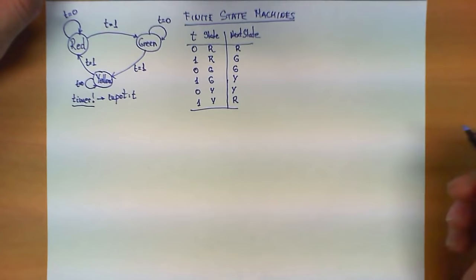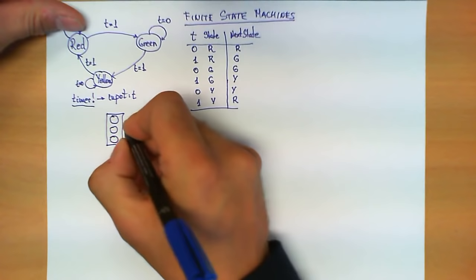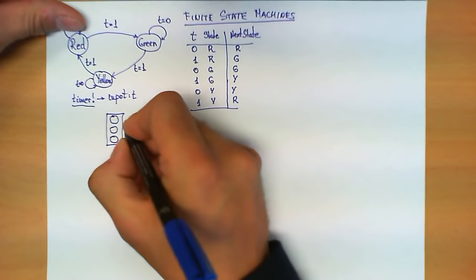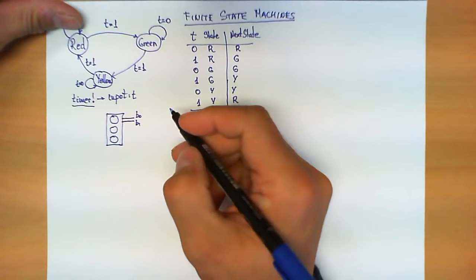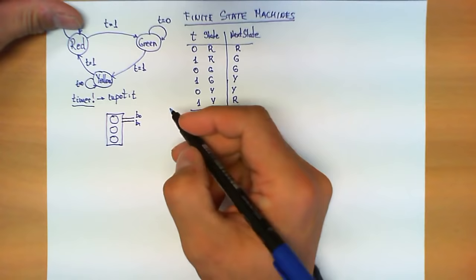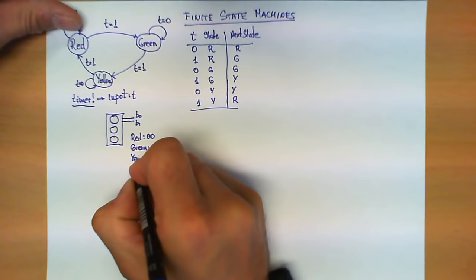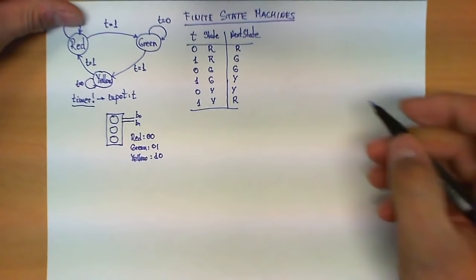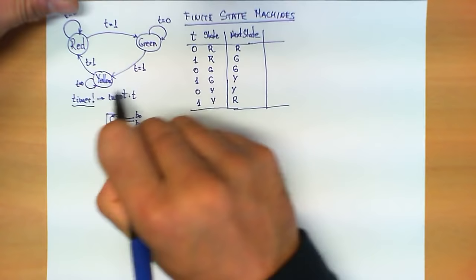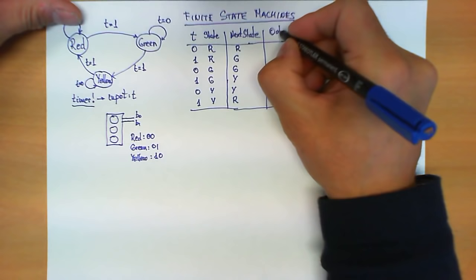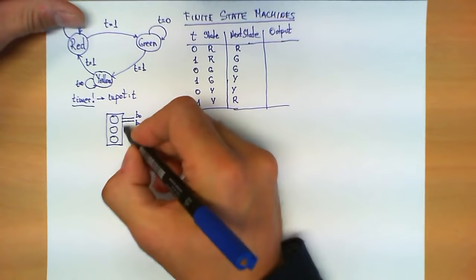Now suppose I actually want to make sure that this machine controls a real traffic light. This traffic light is a circuit that has two bits — bit 0 and bit 1 — that encode which light is going to be on. The encoding is: whenever the light should be red, there should be 00 on this input; whenever the green light should be on, it should be 01; and whenever the yellow light should be on, these two bits should have the value 10. So immediately we can see how to add to this truth table — which represents transitions between states — the value of an output that encodes the proper bits to control the traffic light.